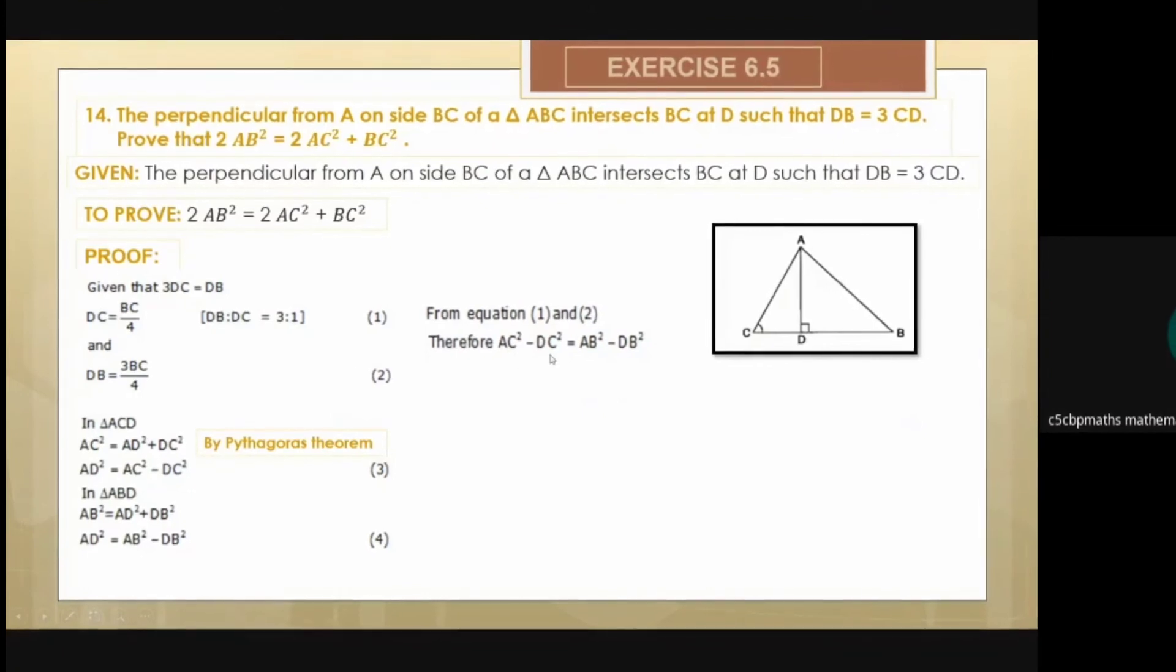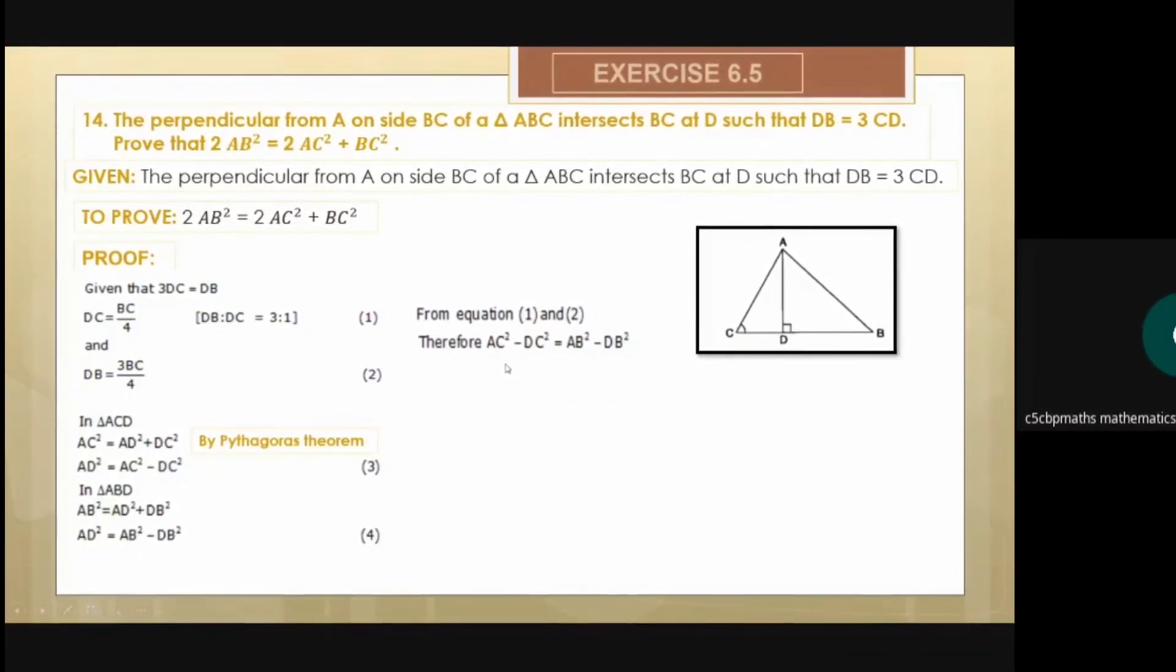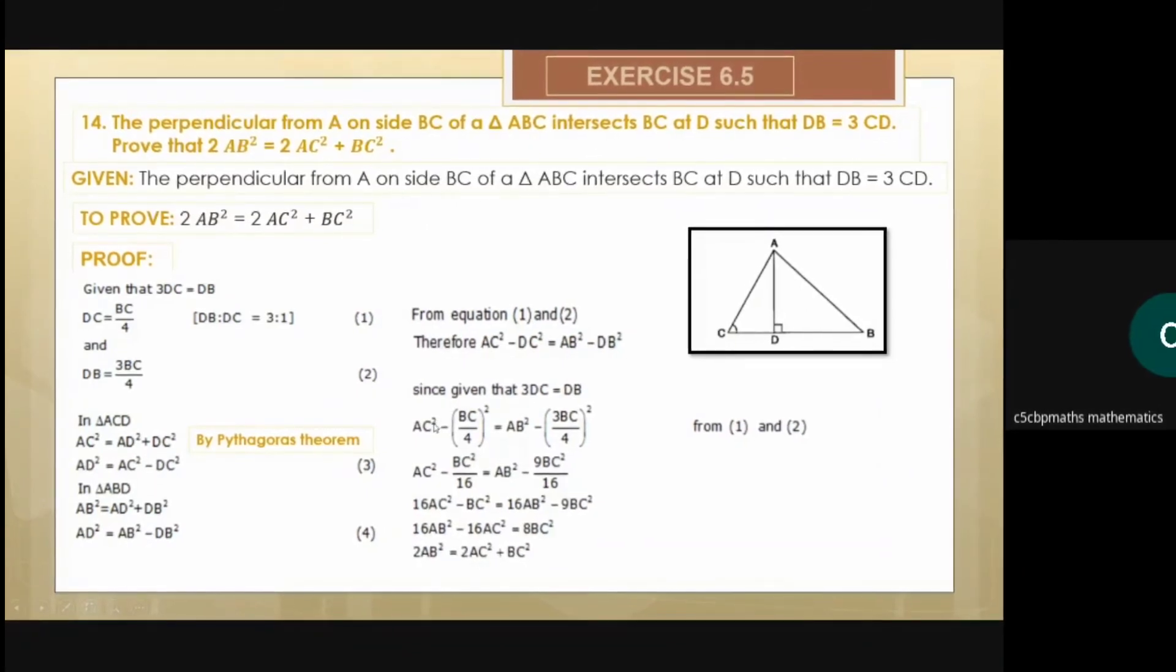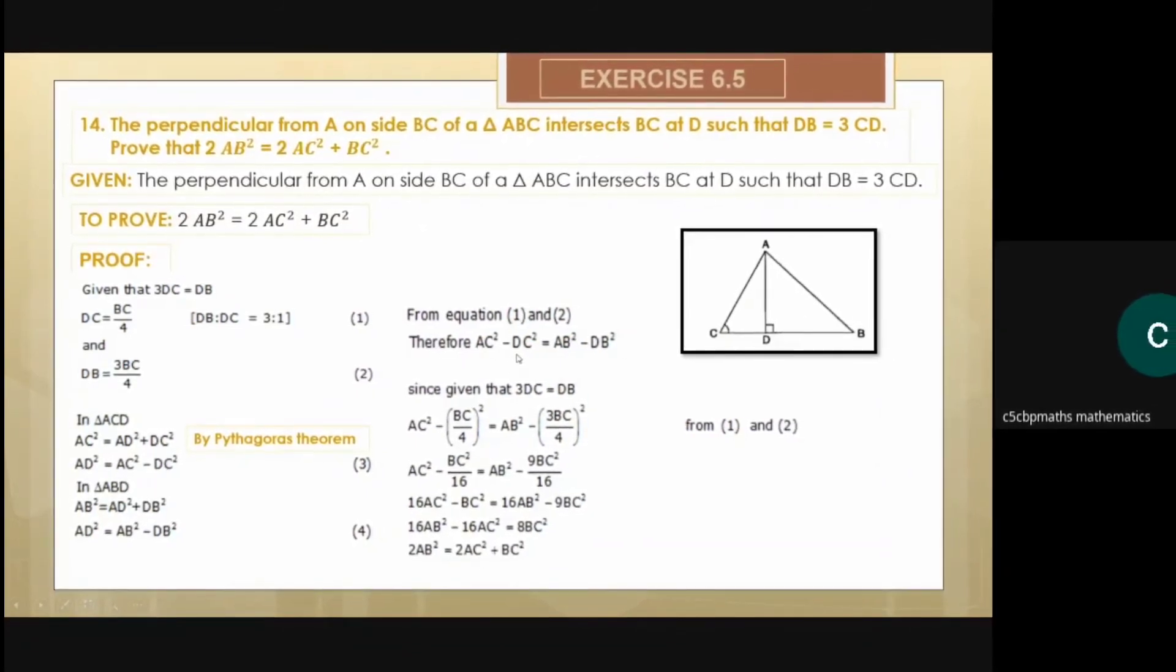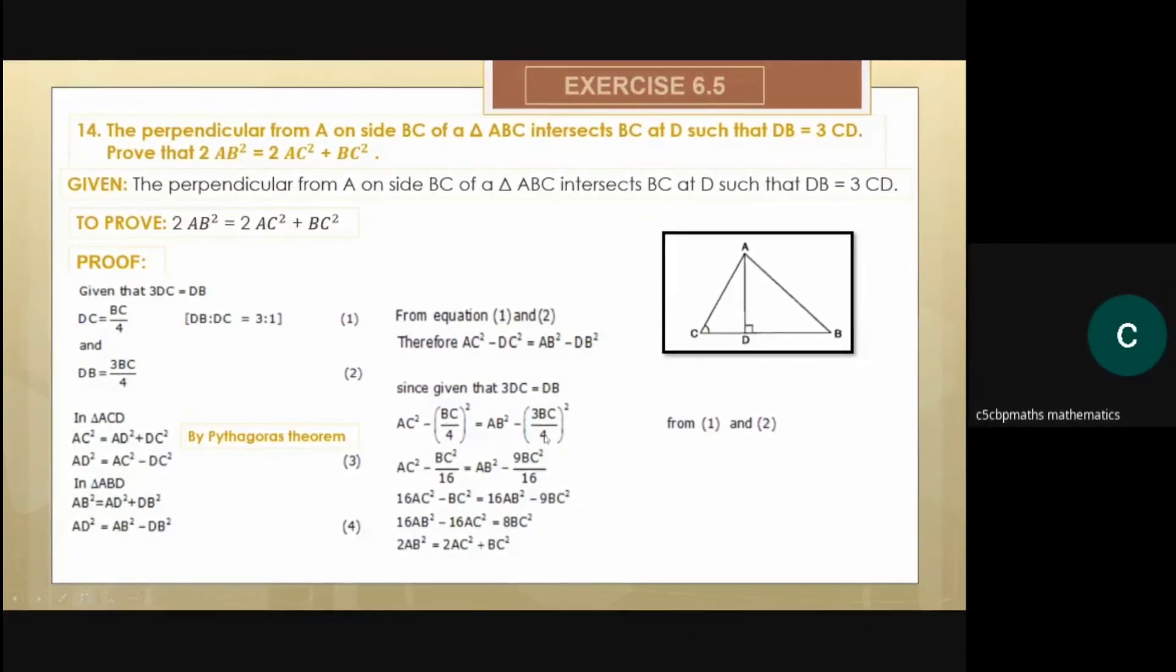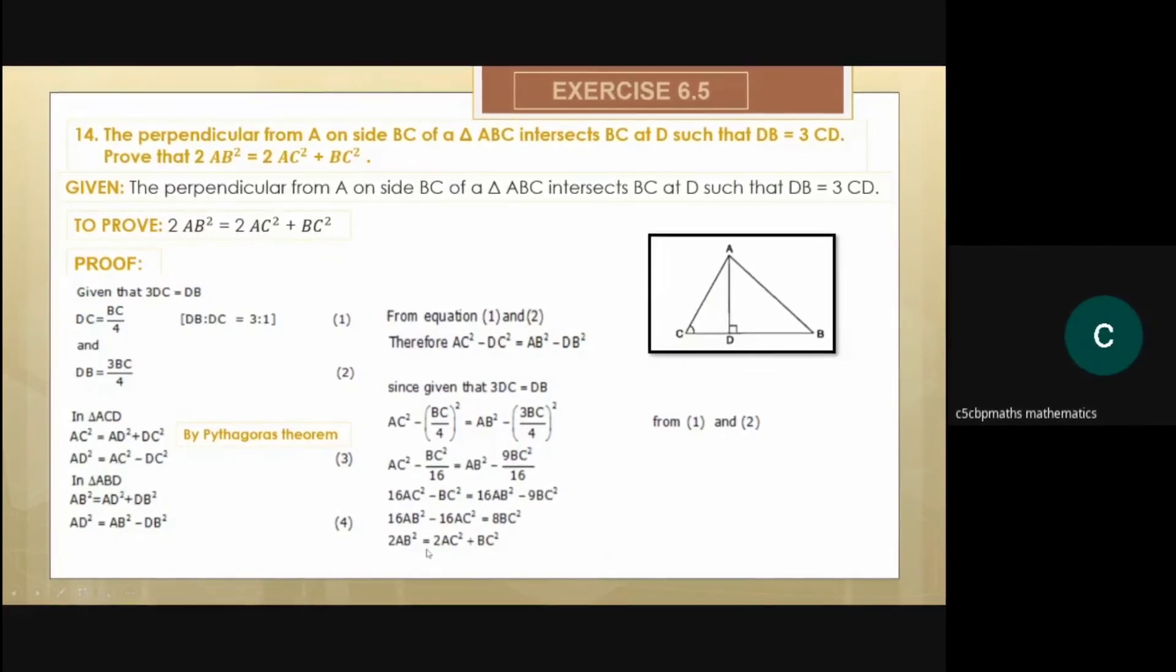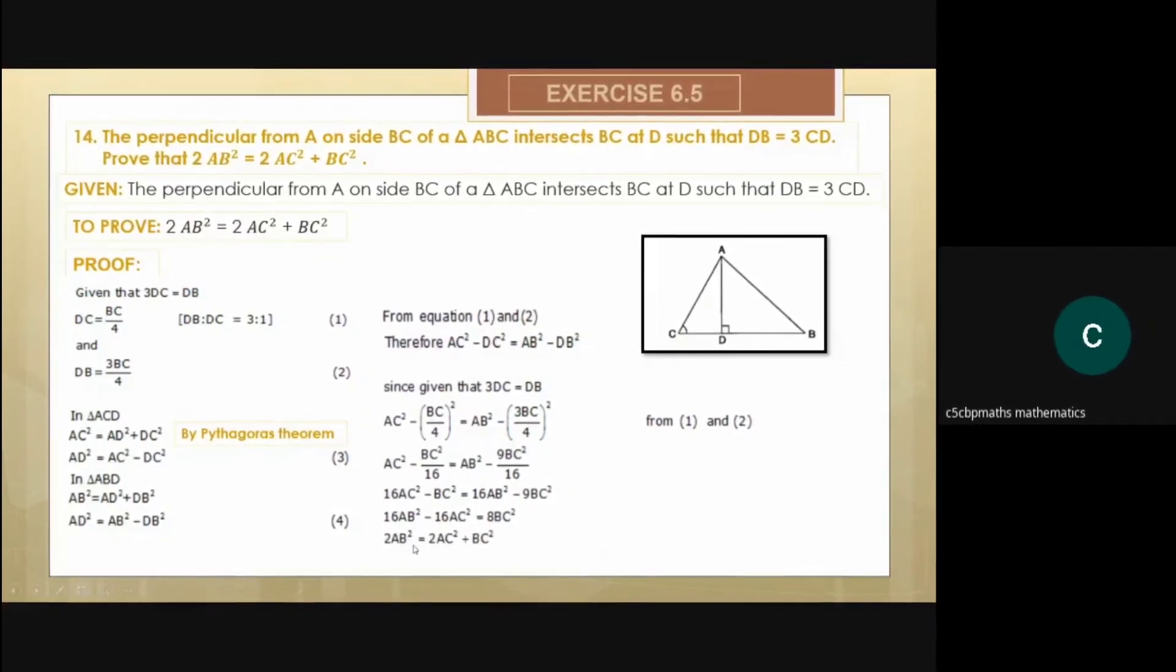And I convert this CD and BD in terms of BC. Let us see what we will get. When I do that, instead of DC I write BC/4, instead of BD I write 3BC/4, and when I solve it on solving and simplification I get the required result.